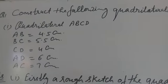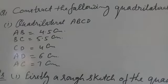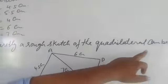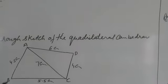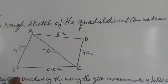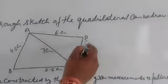Solution: Firstly, a rough sketch of the quadrilateral can be drawn with BC = 5.5 cm, AB = 4.5 cm, DC = 4 cm.